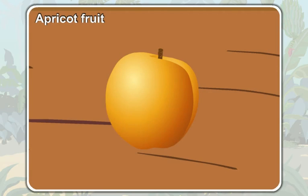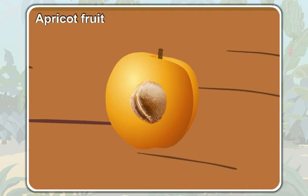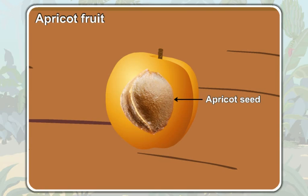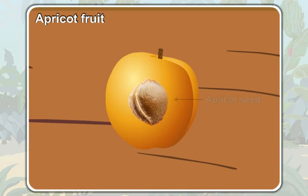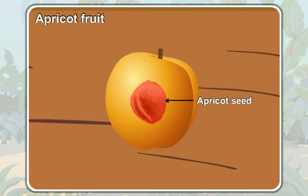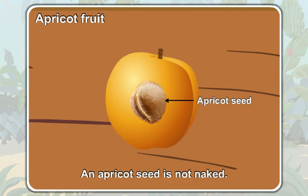Before we cut the apricot fruit, we couldn't see the seed because the flesh of the apricot fruit covered the seed. That is, the apricot seed is enclosed within the apricot fruit. So, we can say that an apricot seed is not naked.